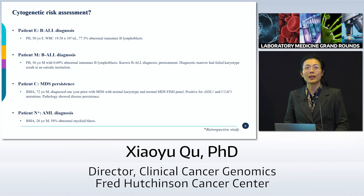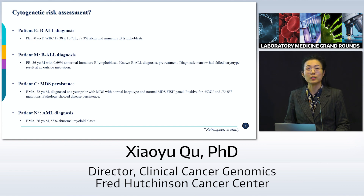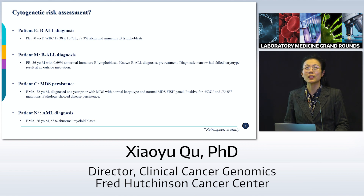Patient E is a B-ALL patient. We received a straightforward diagnostic peripheral blood sample; the sample has 77% abnormal immature B lymphoblasts. Patient M is also a B-ALL diagnostic patient, but it's challenging because the sample we received only has 0.69% abnormal blasts, and the patient had a bone marrow done at a different lab that failed karyotype.